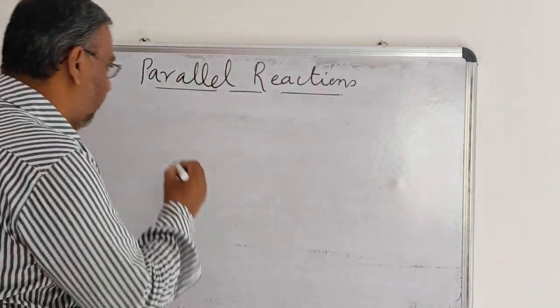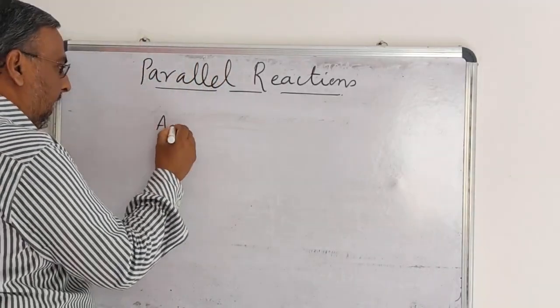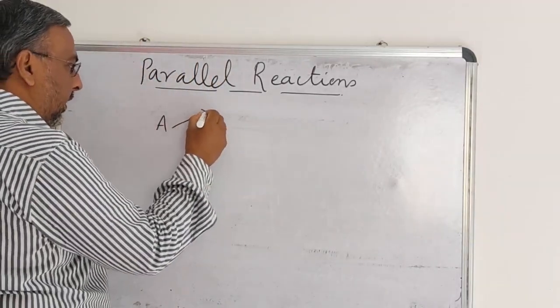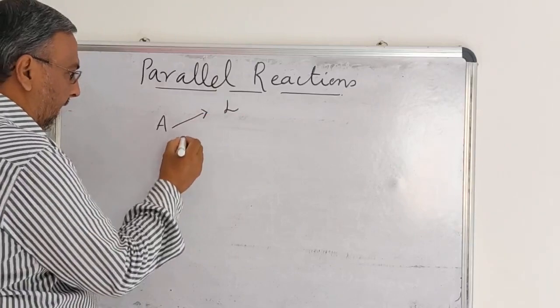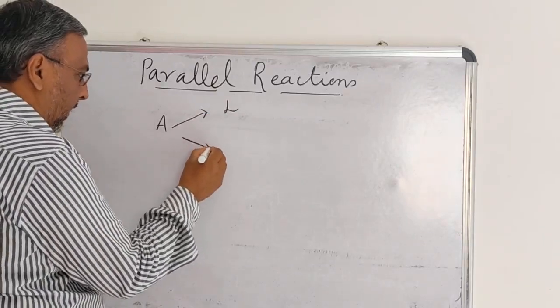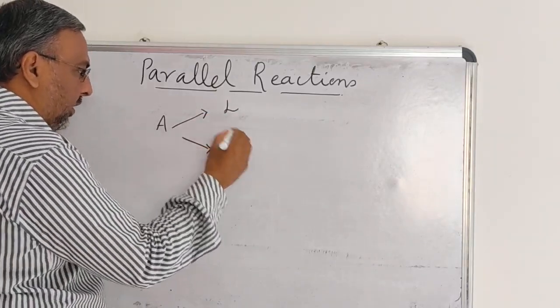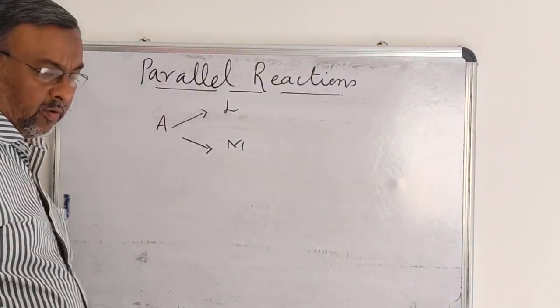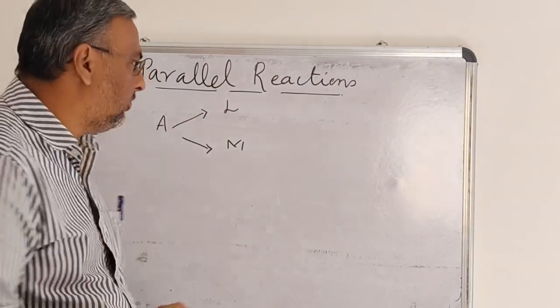For example, A is the reactant. In one pathway it gives product L. In another pathway it gives product B.